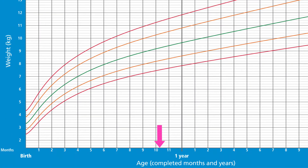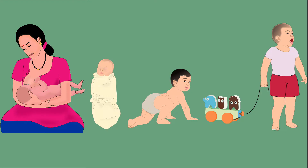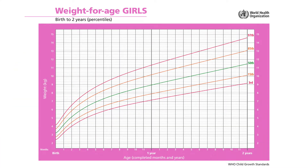The X-axis shows age. It starts with 0, which is at birth. Age is plotted in completed months and years from 0 to 2 years of age.